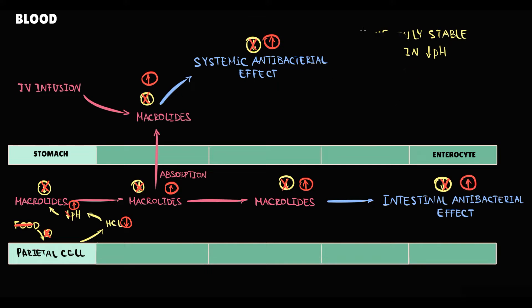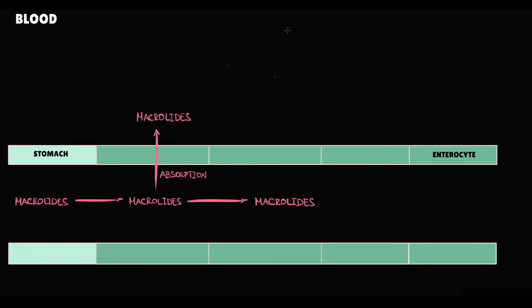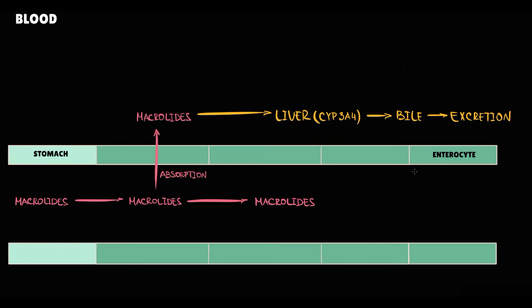From the organism, macrolides are excreted primarily by the liver. Liver metabolizes macrolides by cytochrome P enzyme and excretes them through the bile. Also, a minor portion of macrolides are excreted by the kidneys through the urine.